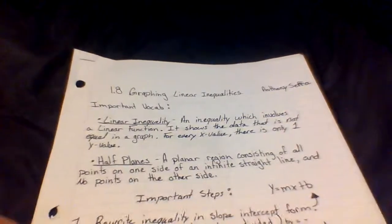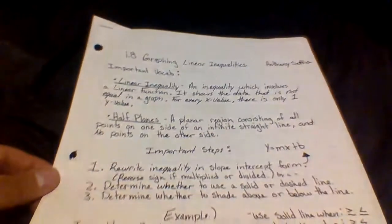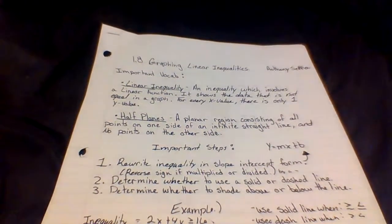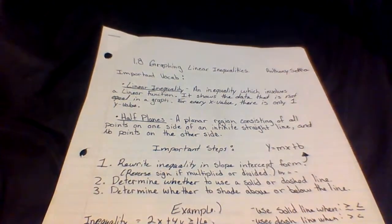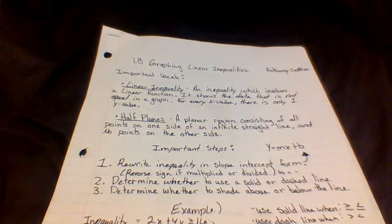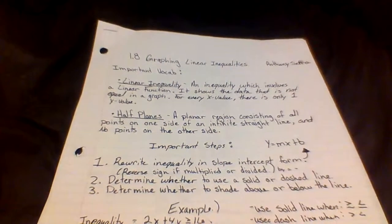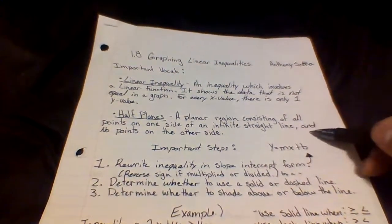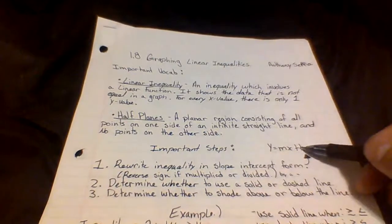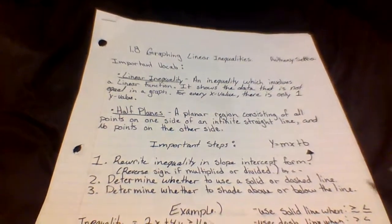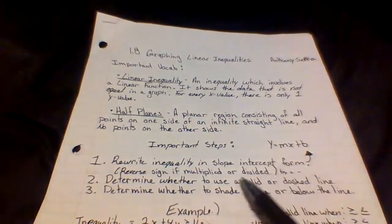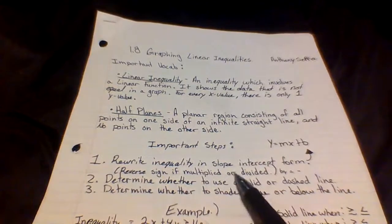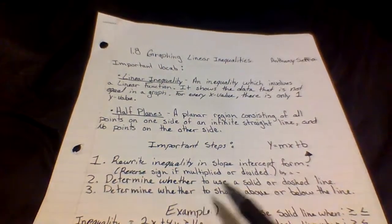Important steps to graphing linear inequalities. First, rewrite the inequality in slope-intercept form — y equals mx plus b. You want to reverse the sign if you multiply or divide by a negative number.